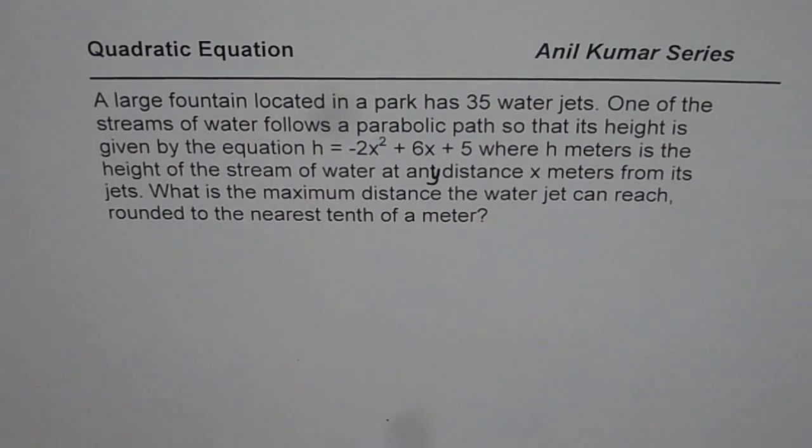One of the streams of water follows a parabolic path so that its height is given by the equation h equals minus 2x squared plus 6x plus 5, where h meters is the height of the stream of water at any distance x meters from its jets.